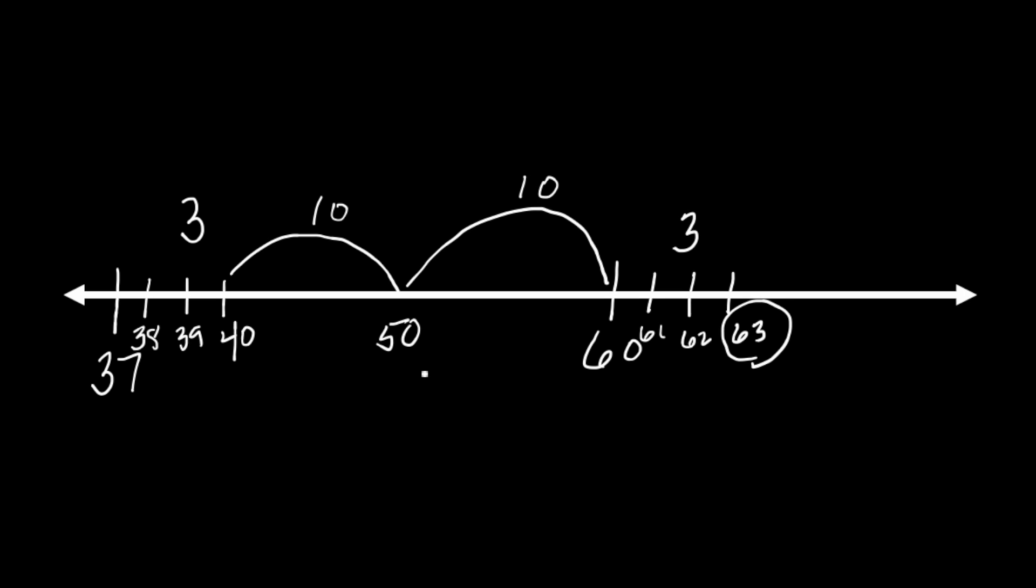Our next step is we're going to add together all the jumps. So we're adding 3 plus 10 plus 10 plus 3 equals blank. Now there's a couple ways we can do this, but I see some easy addition facts. I see a 3 plus 3 that gives us 6. I see a 10 plus 10 that gives us 20.